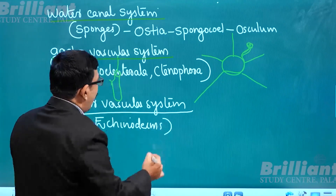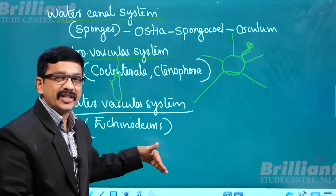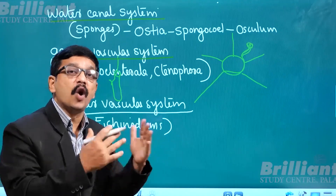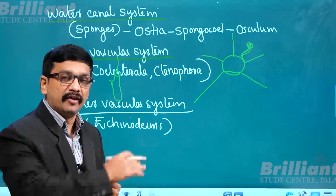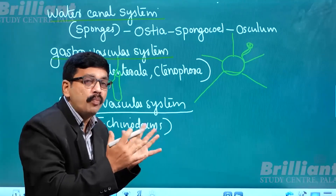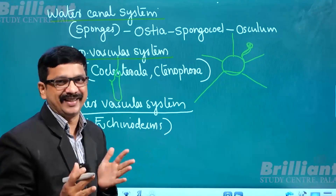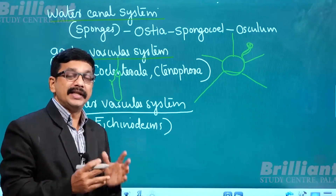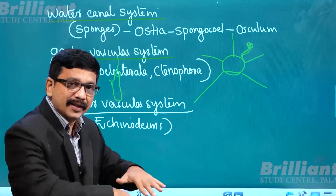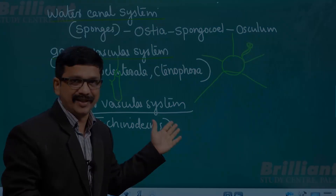In all these types of circulation, the animal depends on surrounding water for circulation. There is no their own body fluid for circulation. All these simpler animals — using water canal system, gastro-vascular system, or water vascular system — depend on surrounding water, with no their own body fluid involved.